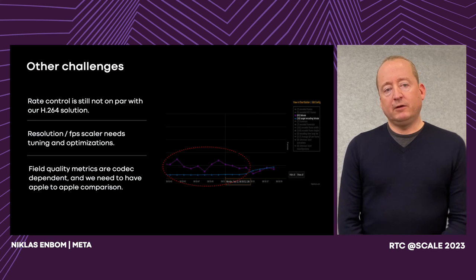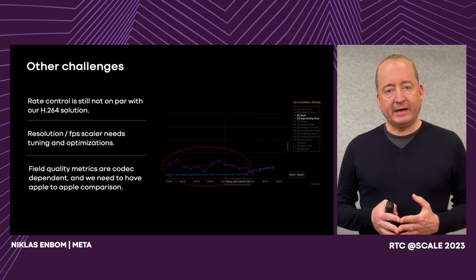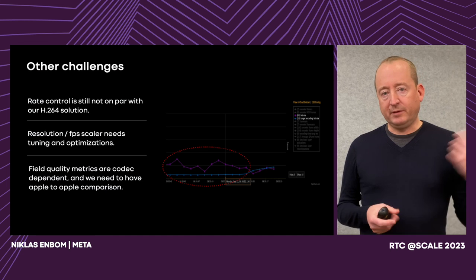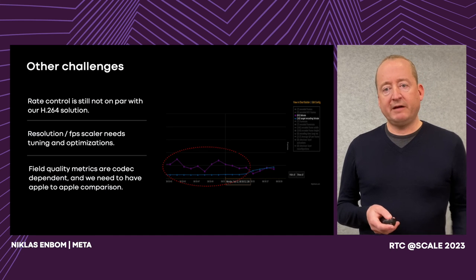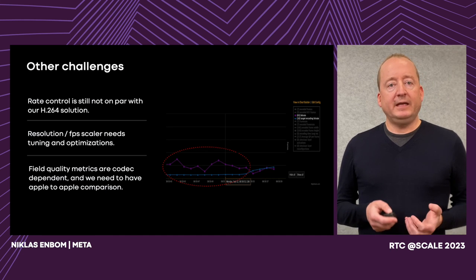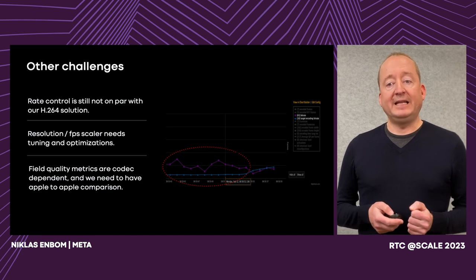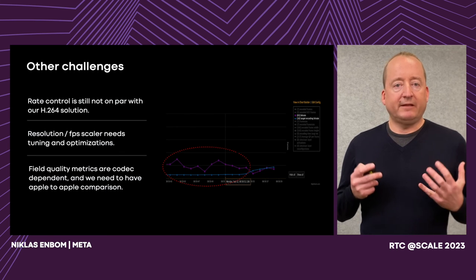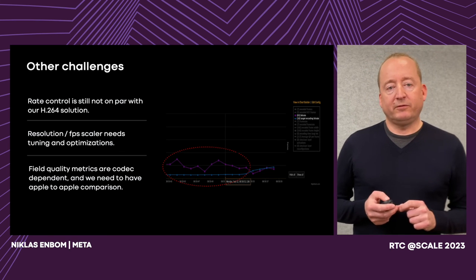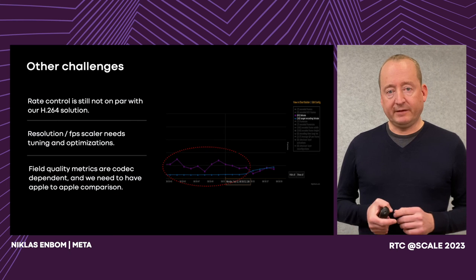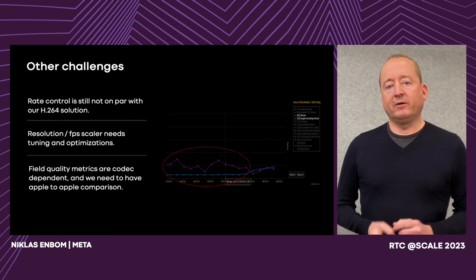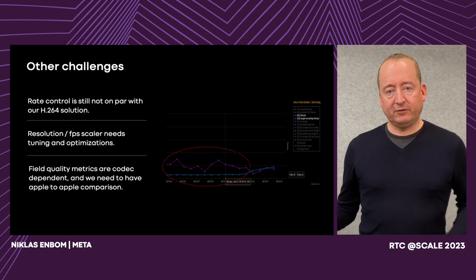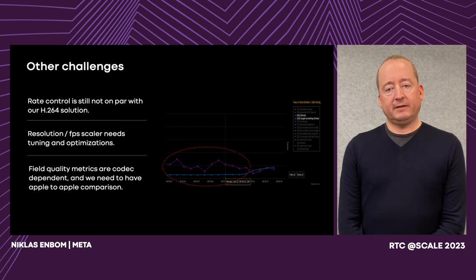Lastly, in offline testing it's very easy to compare different codecs — you can use quality tools like PSNR and VMAF — but they don't work to track the user experience in the field. The current set of tools we use for our field metrics are codec-dependent, and we are working on creating metrics that we can use across different codecs to fully measure the quality impact.